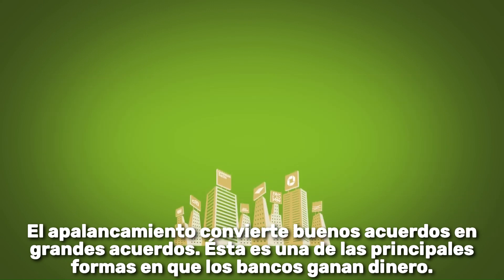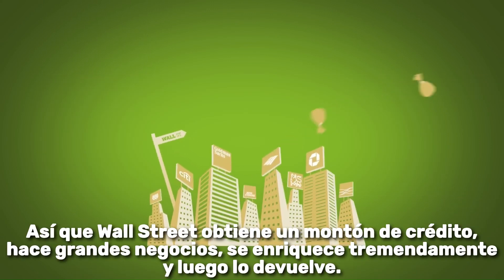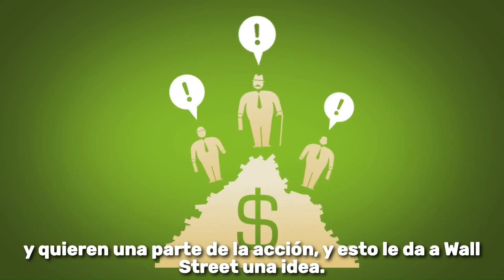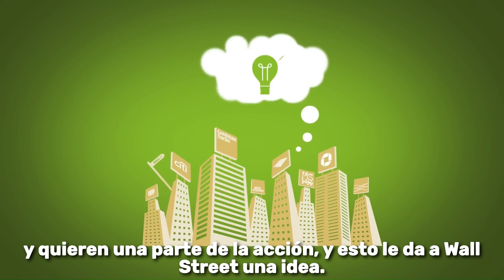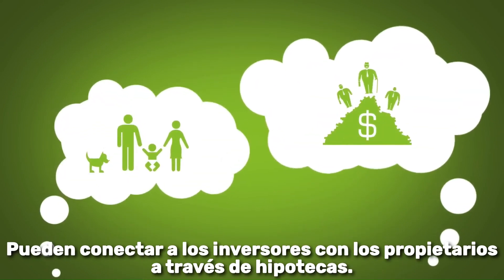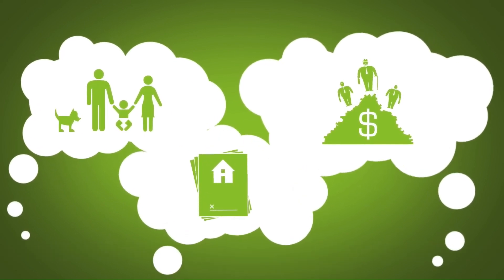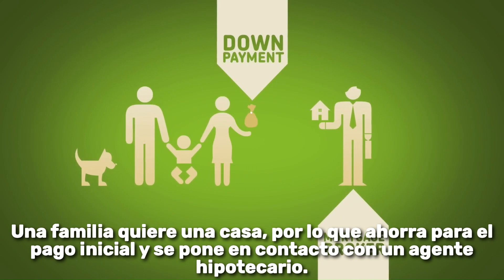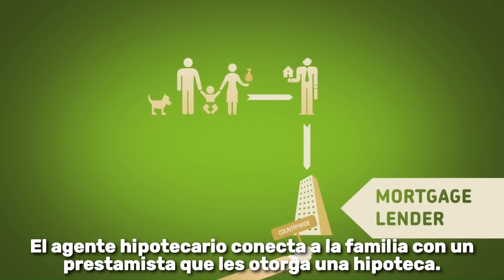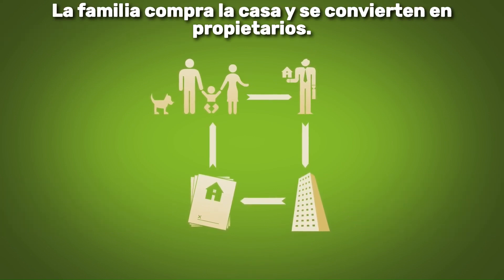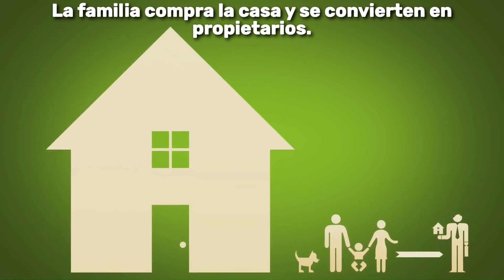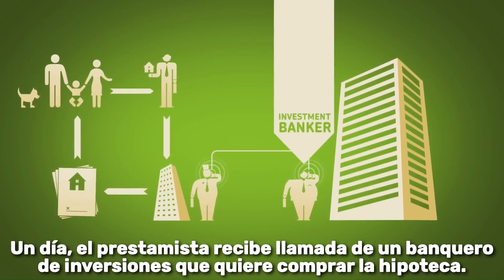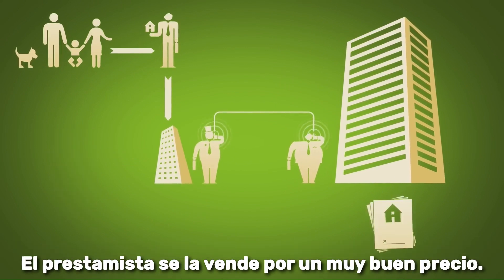So Wall Street takes out a ton of credit, makes great deals, grows tremendously rich, and then pays it back. The investors see this and want a piece of the action, and this gives Wall Street an idea: they can connect the investors to the homeowners through mortgages. A family wants a house, so they save for a down payment and contact a mortgage broker. The broker connects the family to a lender who gives them a mortgage — the broker makes a nice commission, and the family buys a house and becomes homeowners. This is great for them because housing prices have been rising practically forever.